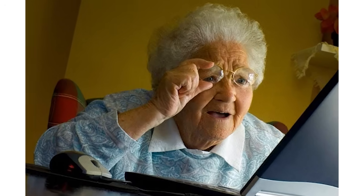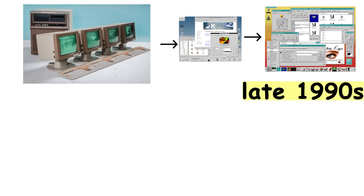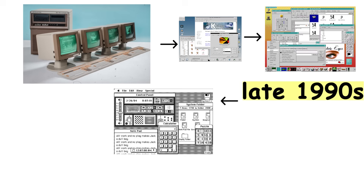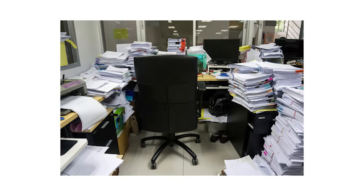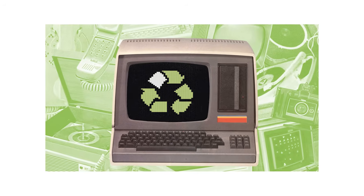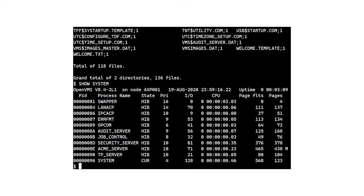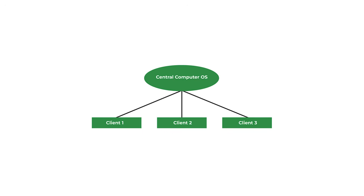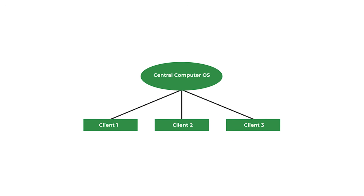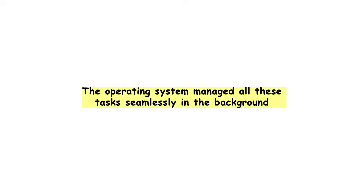Suddenly, your grandmother could use a computer. Linux desktops like KDE and GNOME emerged in the late 1990s, bringing open-source GUI systems to the table. These operating systems introduced the desktop metaphor: your screen is a desk, files are documents on that desk, the trash can is where you throw things away. It's intuitive because it mirrors real-world objects, making computers accessible to billions of people. Level 5 systems also refined multitasking for regular users — you could have Word open while listening to music, downloading files, and browsing the web.